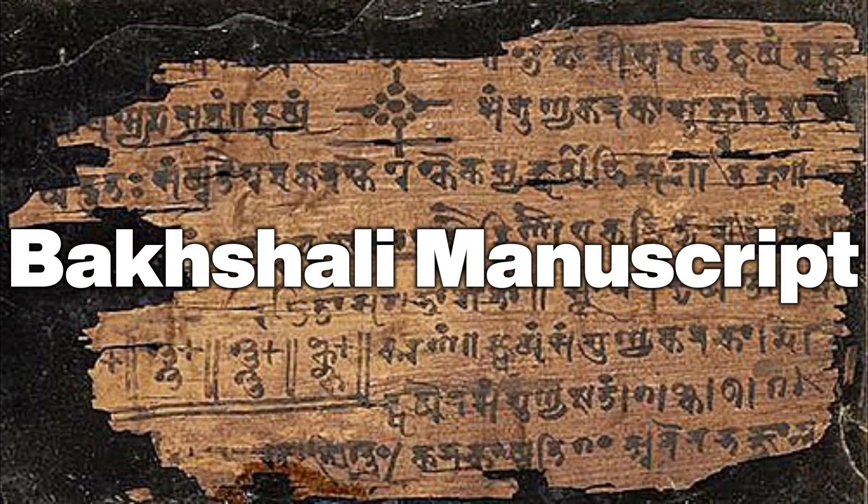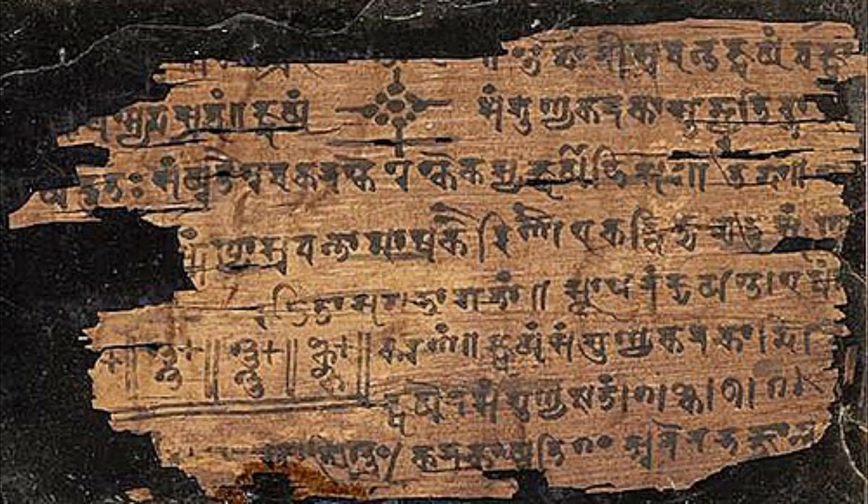The Bakshali Manuscript is an ancient Indian mathematical text written on birch bark that was found in 1881 in the village of Bakshali, Mardhan, near Peshawar in present-day Pakistan, historical Gandhara. It is perhaps the oldest extant manuscript in Indian mathematics.